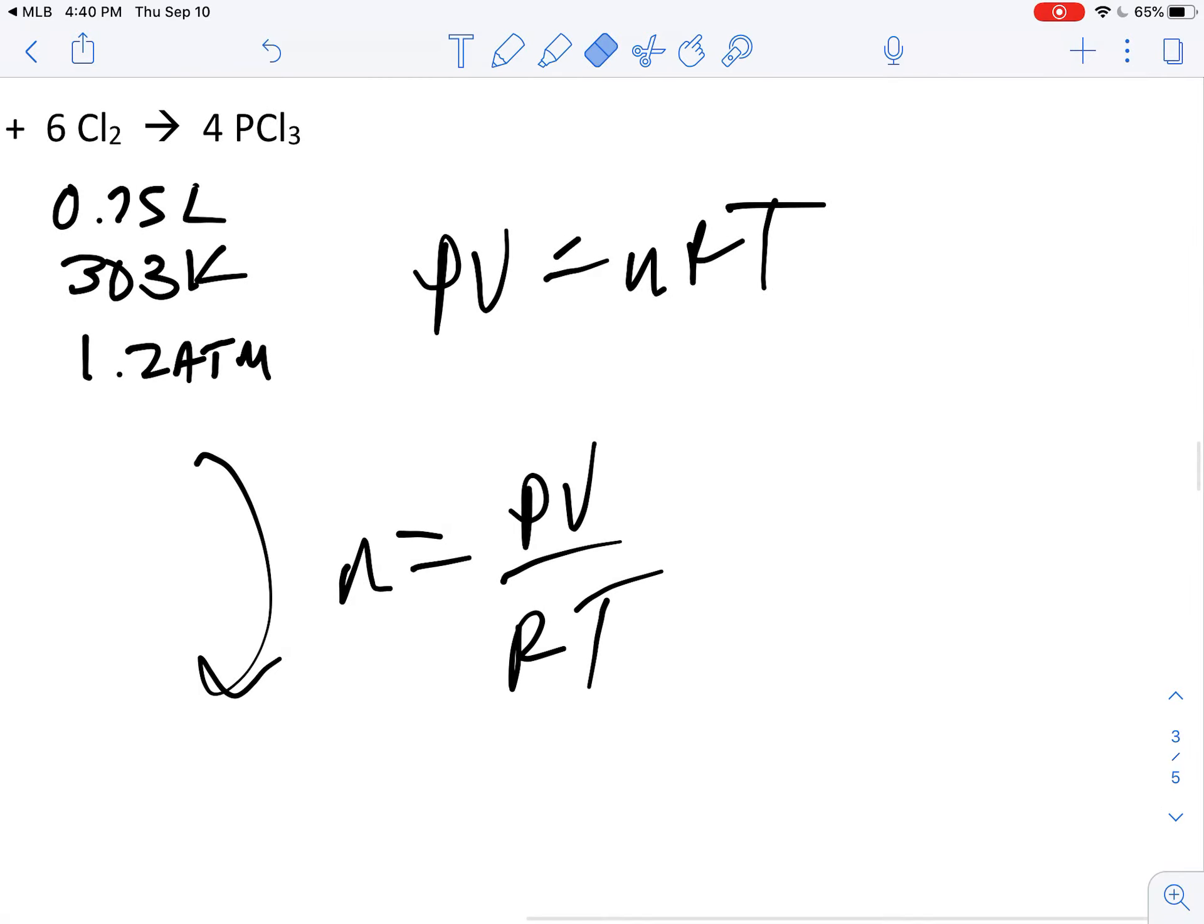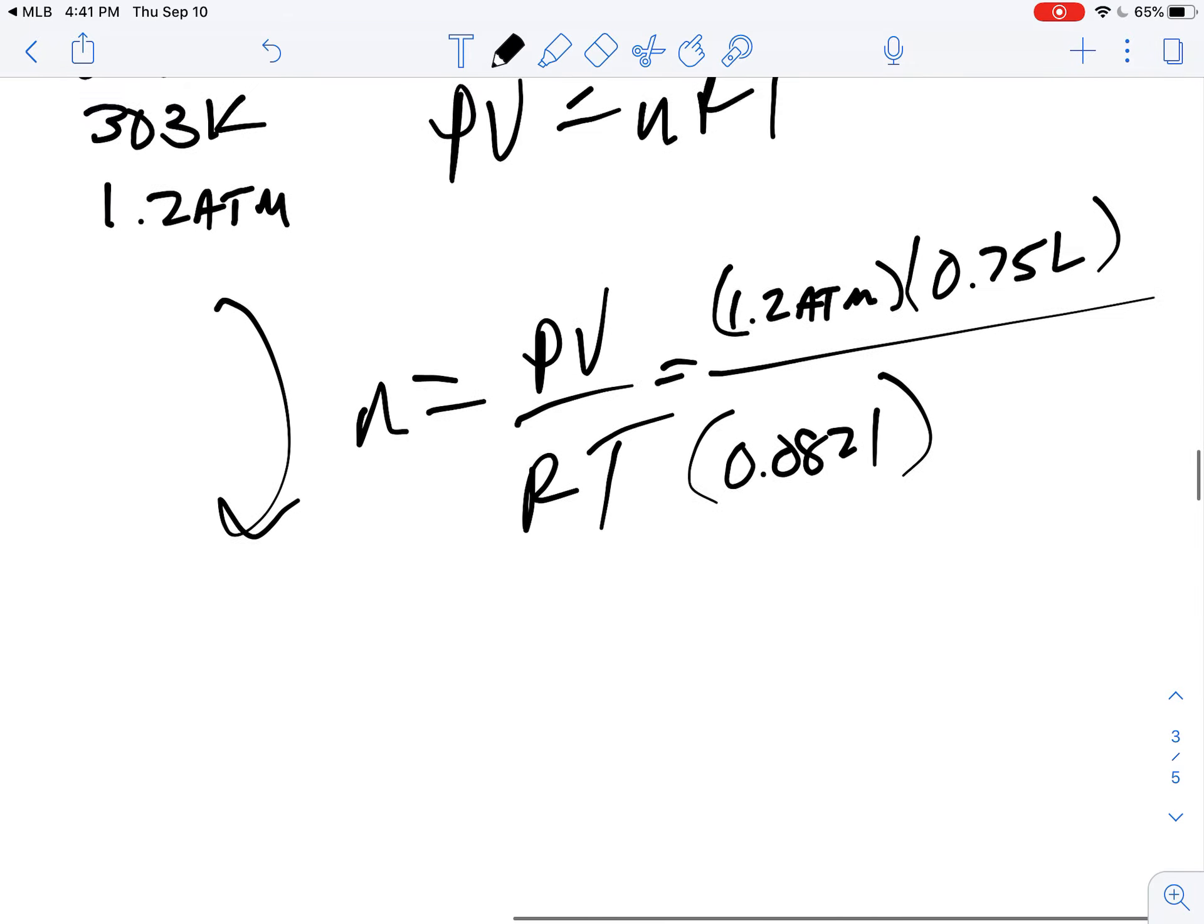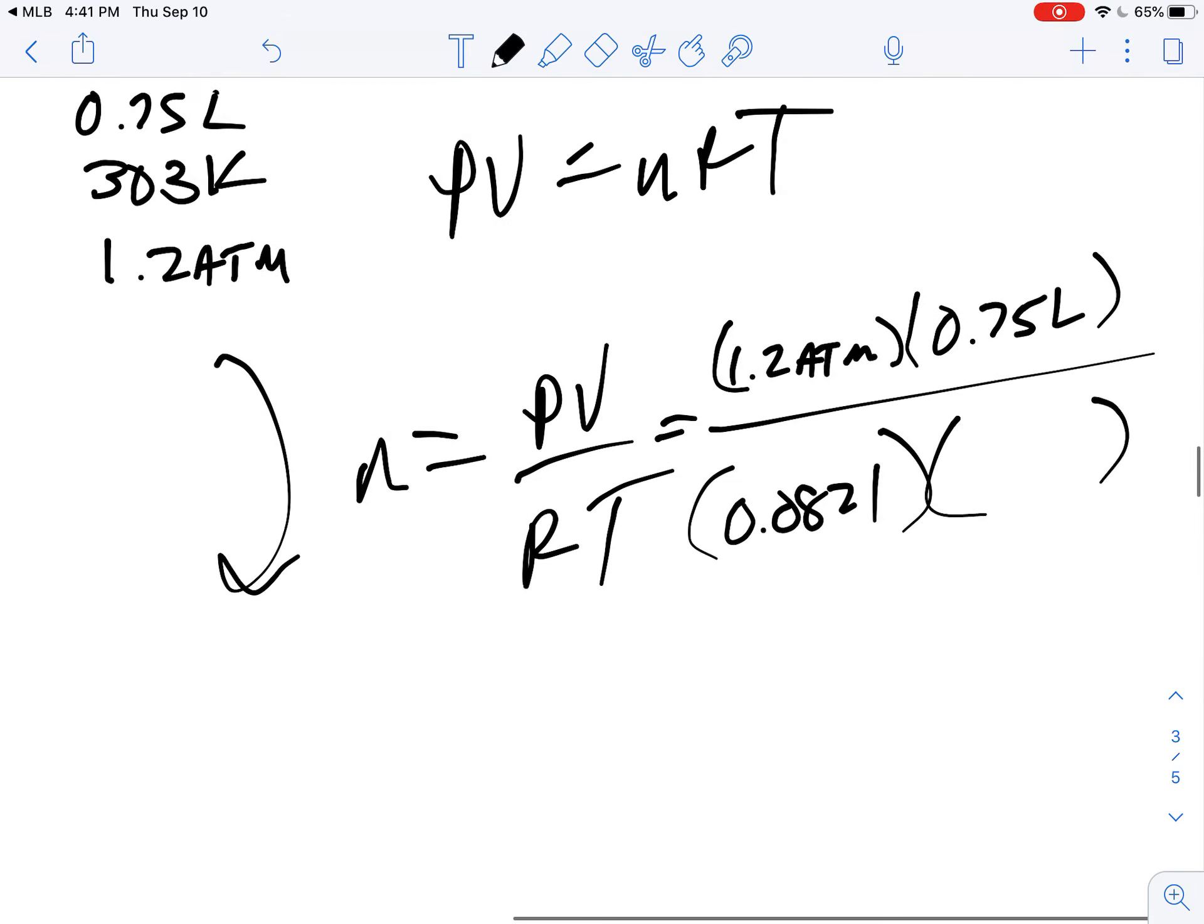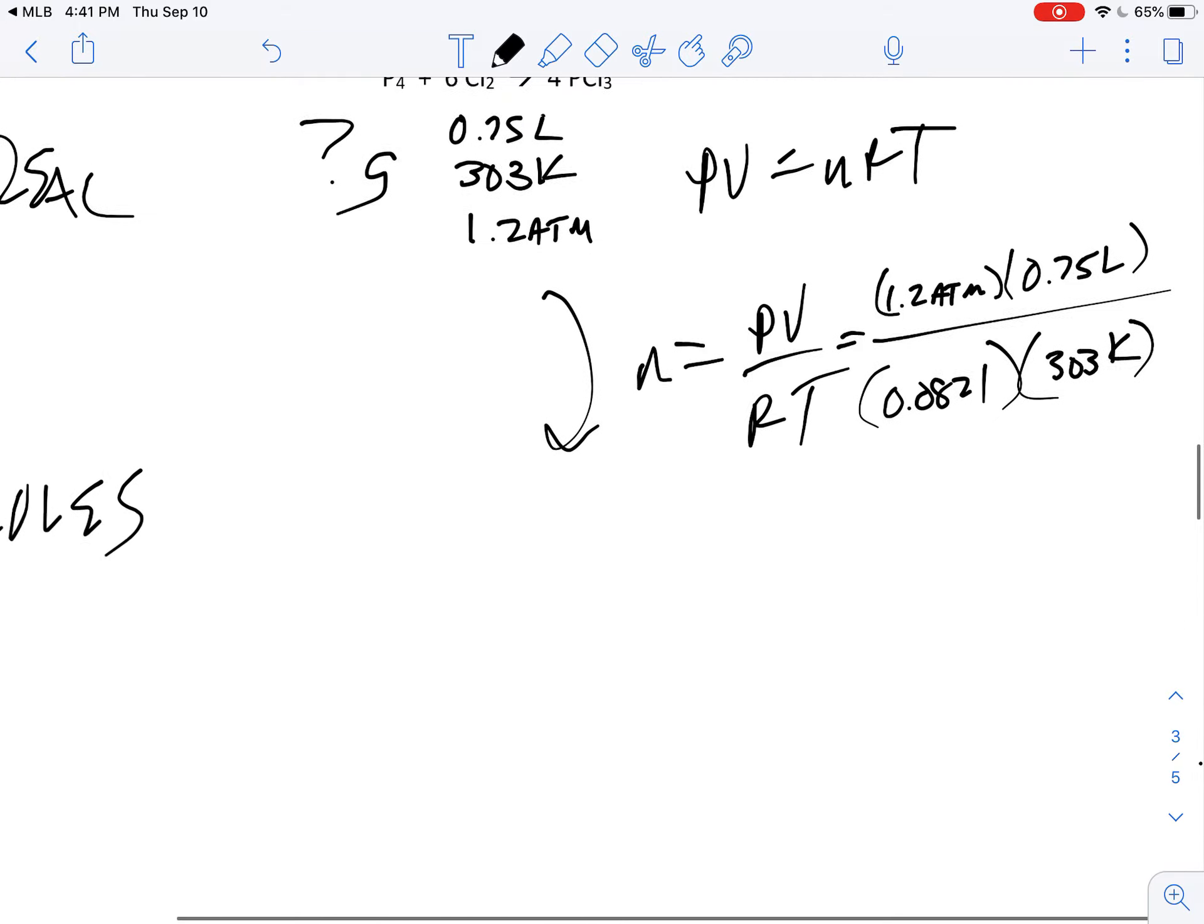So if we take a look at this, my pressure is 1.2 atmospheres, my volume was 0.75 liters, my R—I'm going to use 0.0821 this time because it is in atmospheres and not torr or millimeters—and then the temperature here is the 303 Kelvin I converted it to. So assuming I've done my math right...